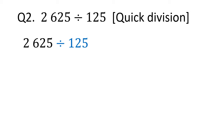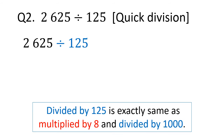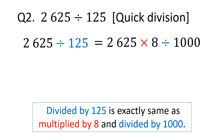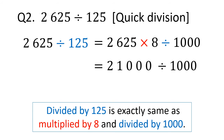Let's see another question: 2625 divided by 125. We don't do long division because it is a division by 125. Divided by 125 is exactly the same as multiplying by 8 and then dividing by 1000. So 2625 divided by 125 can be changed to 2625 times 8 divided by 1000.